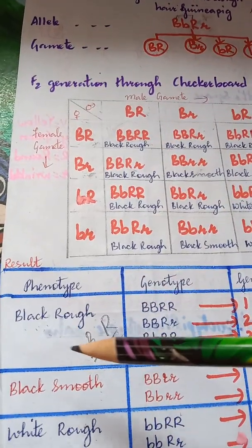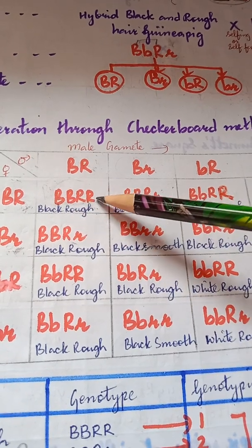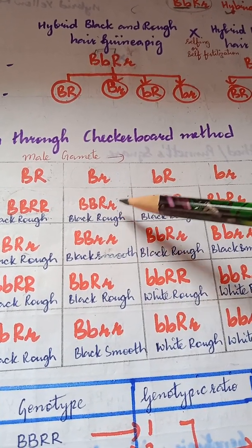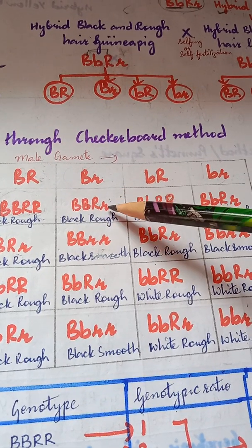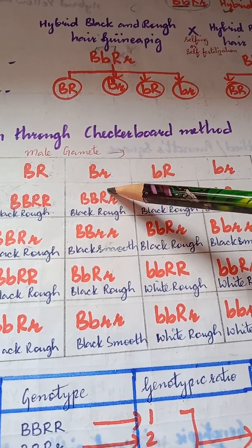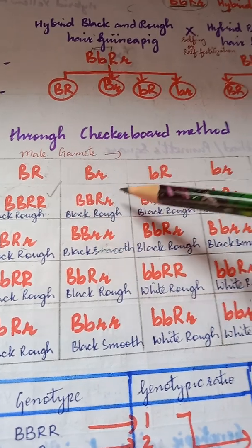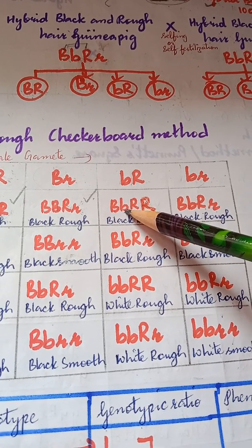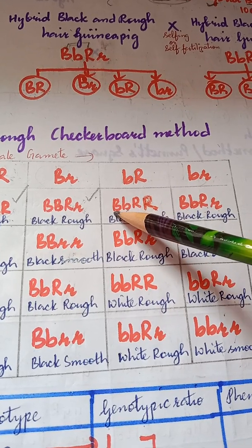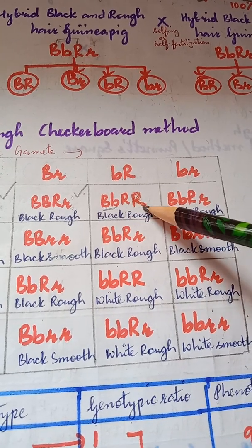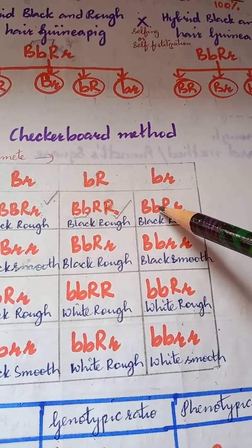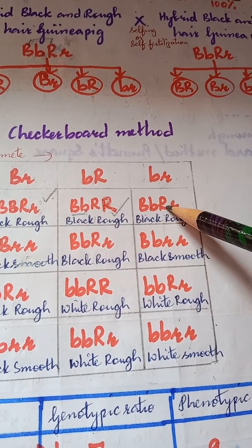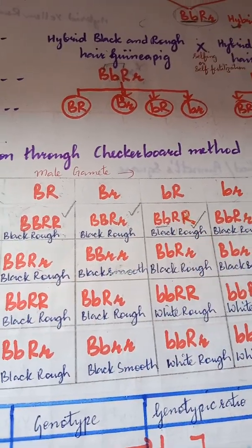Let's find out the black and rough offsprings. Capital B and capital R means black and rough. In another case, capital B is present along with capital R and small r — but small r is recessive and cannot express itself, so capital R dominates and it is still black and rough. Similarly, capital B with small b — small b is recessive, so capital B dominates giving black — combined with capital R gives black and rough. Wherever capital B and capital R are both present (even with their recessive counterparts), the offspring is black and rough. Counting all such combinations: altogether there are 9 black rough guinea pigs.